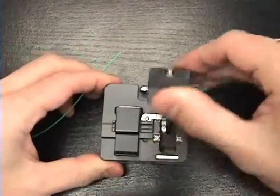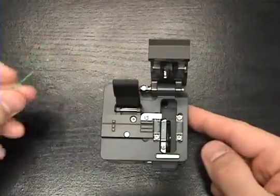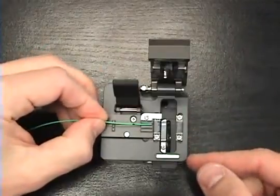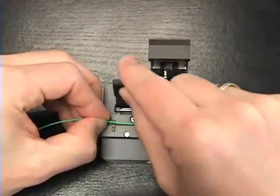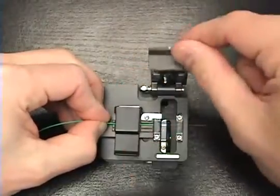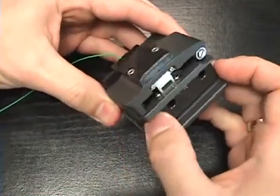To prepare the cleaver, lift up both flaps and make sure the blade is in the forward position. Set the fiber down so that the edge of the 900 micron coating is at the 10.5 to 11 millimeter mark. Then you can close both flaps and slide the blade back to cleave the fiber.